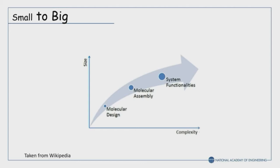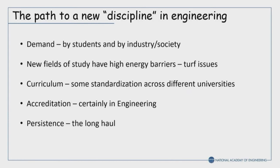The path to a new program is tortuous and demanding. You have to look at whether there's demand for a new program. New fields of study have high energy barriers — there are turf issues in universities. You have to edge your way in. Curriculum needs some standardization if you're going to call yourself a discipline. Accreditation is important in engineering in the long run. And persistence — the long haul. You've made it through 10 years, that's the hard part. It gets a little bit easier because you've got some momentum.